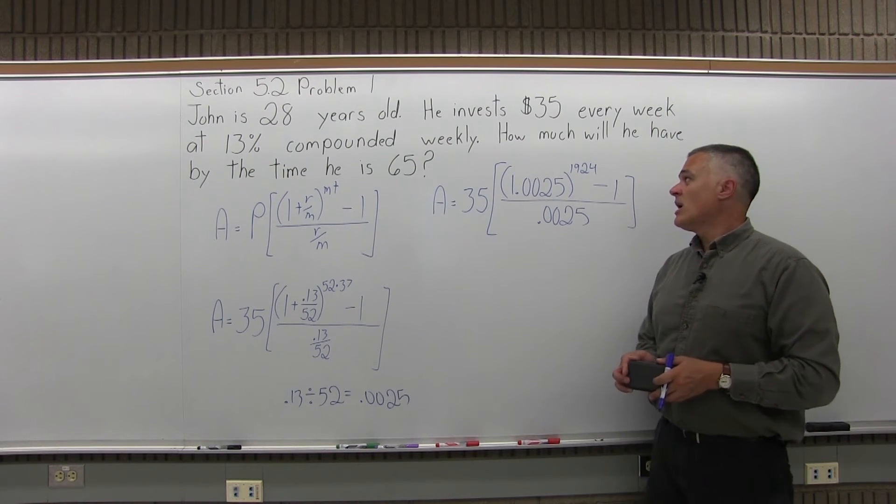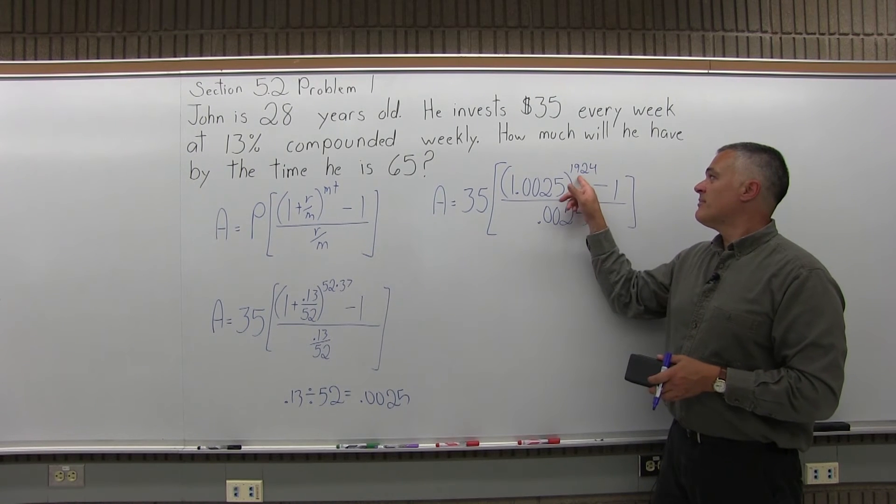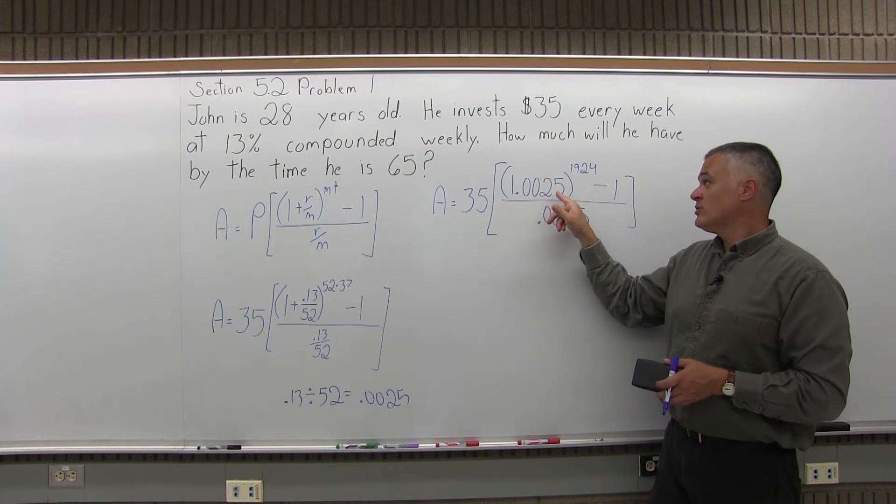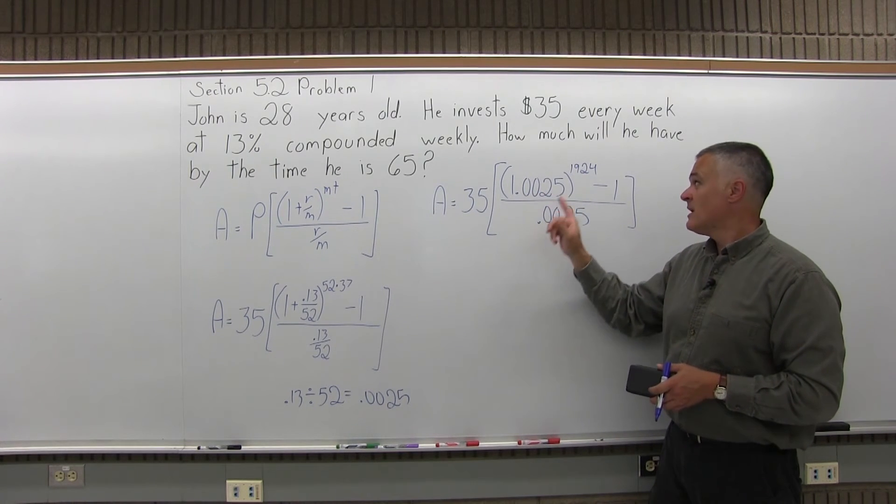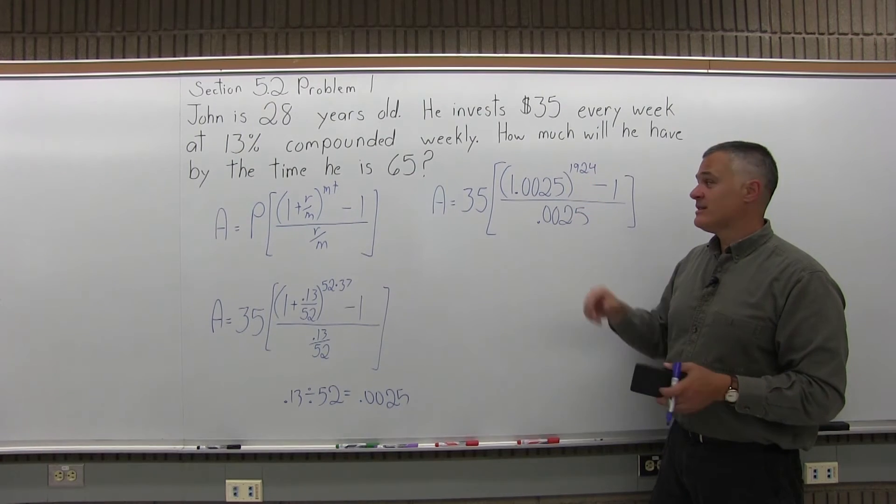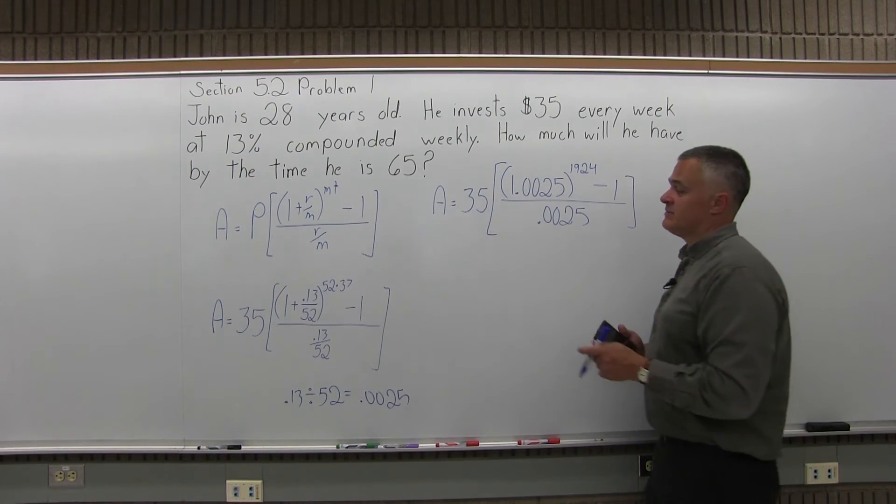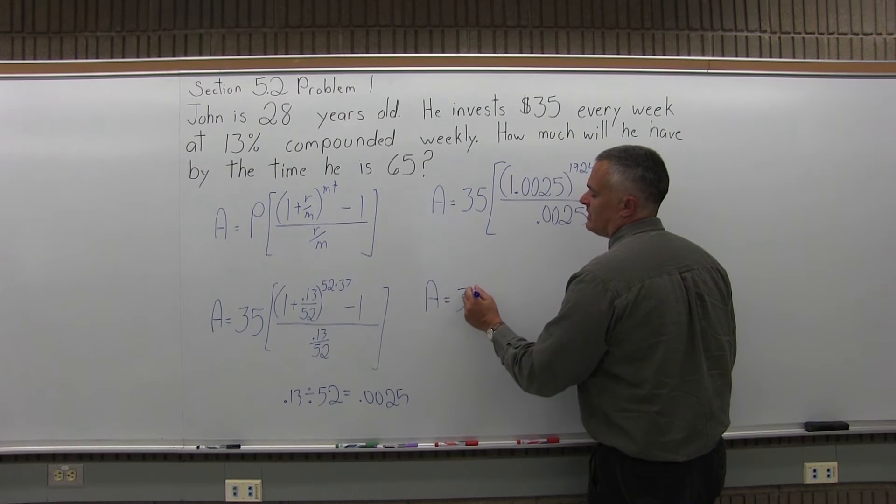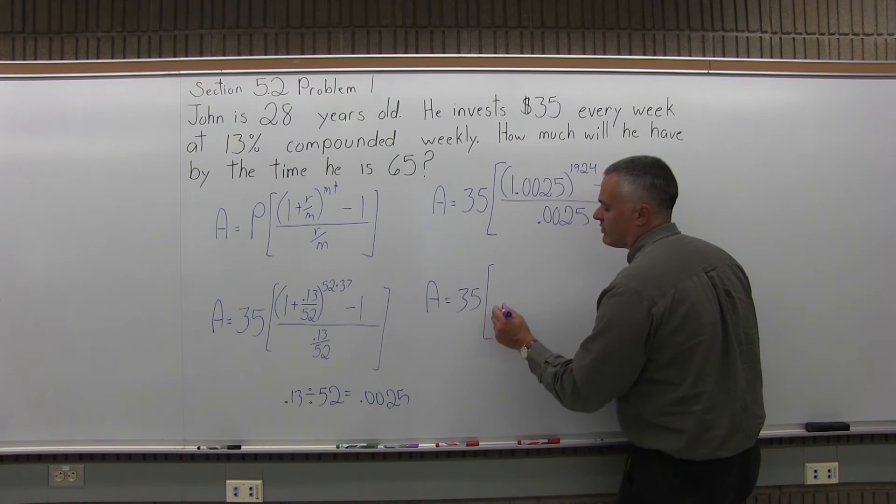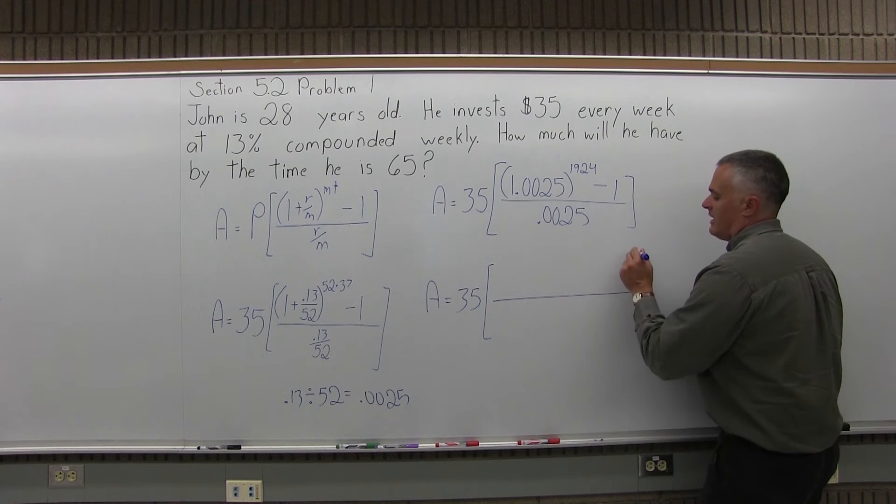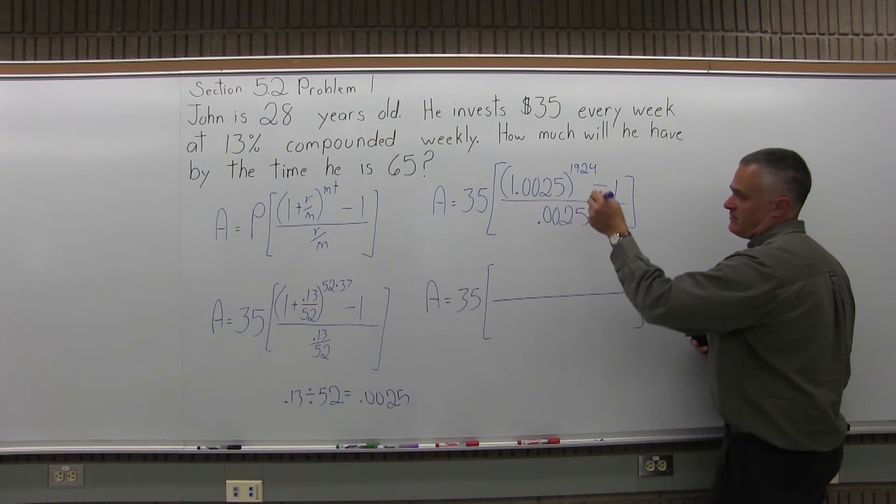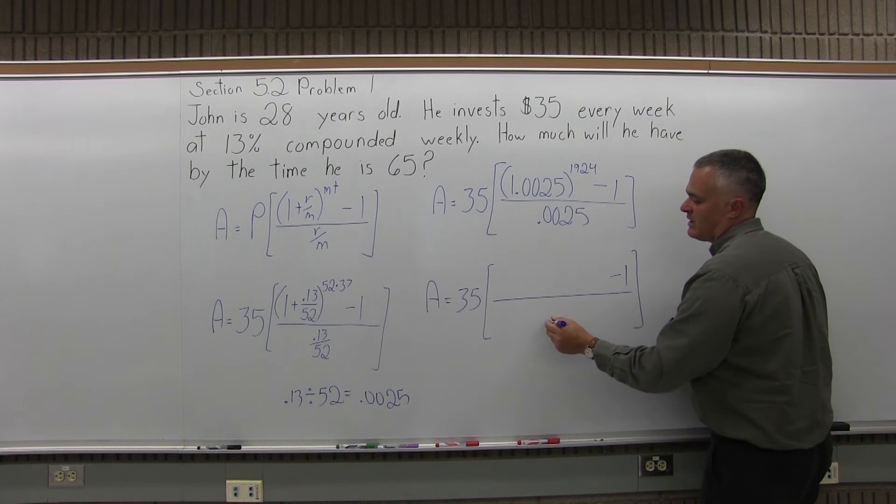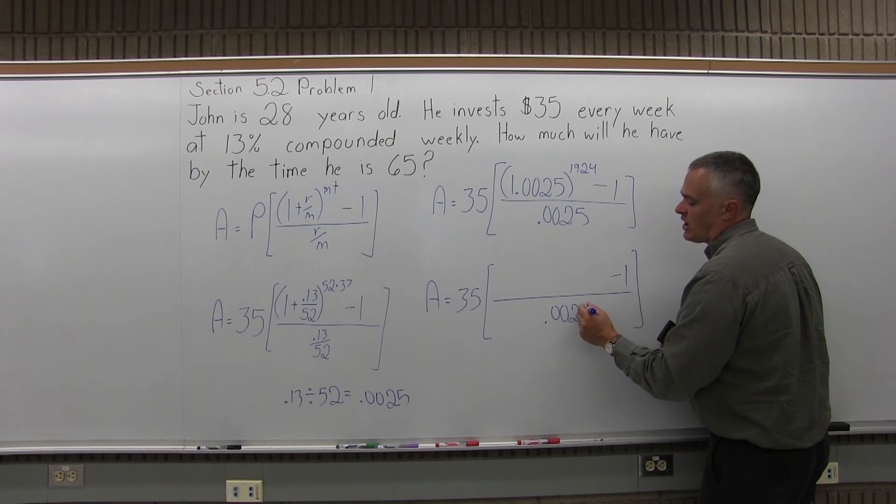So now at this point in the problem, what you need to do is deal with that big exponent of 1,924, so you have to do 1.0025 times itself almost 2,000 times. Again, without a scientific calculator, not something you can do easily. So I'm going to go A equals 35 times some brackets, and I'm going to have some result for that massive exponent I'm going to do, there's going to be a minus 1 after it, and a .0025 in the denominator.